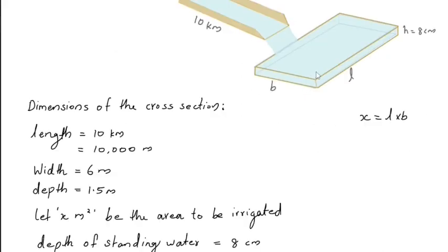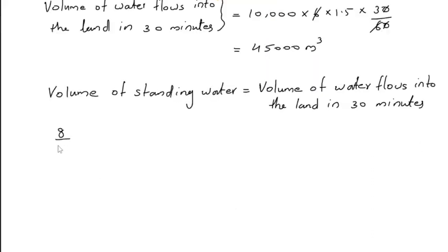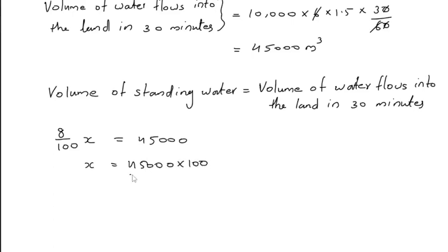Water is collected on this area in the shape of a cuboid, so the volume of the standing water is equal to the product of the area of the land and the depth of the water. Volume of standing water is (8/100) times x, and the volume of water that flows into the land in 30 minutes is 45,000 cubic meters. Now x equals 45,000 times 100 divided by 8, which equals 562,500.